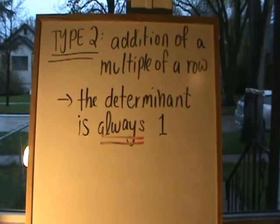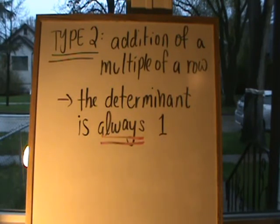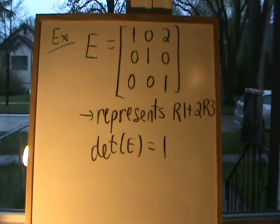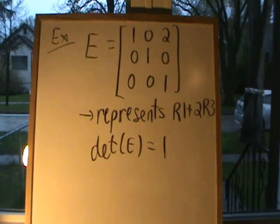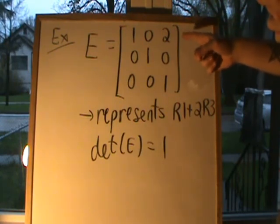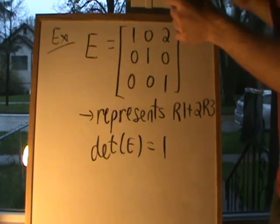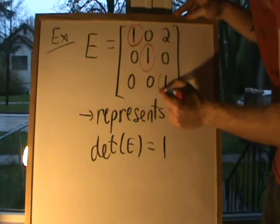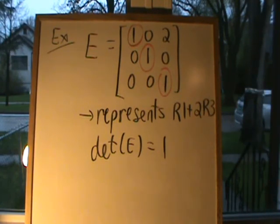Type 2 is the addition of a multiple of one row to another row. If your elementary matrix is of type 2, the determinant is always equal to 1. For example, matrix E representing row 1 plus two times row 3 has determinant equal to 1. These elementary matrices are always upper or lower triangular, so we apply Theorem 1 — all entries on the main diagonal are always equal to 1, so multiplying them gives a determinant of 1.